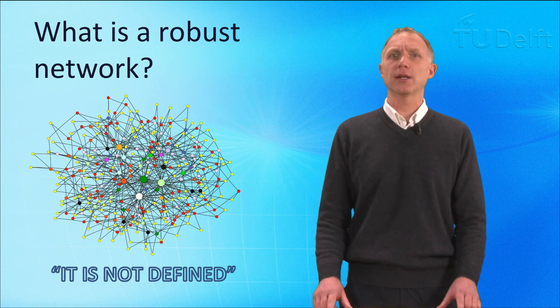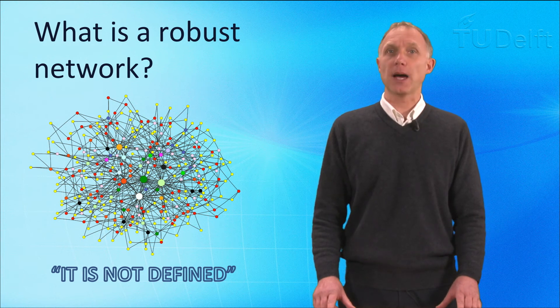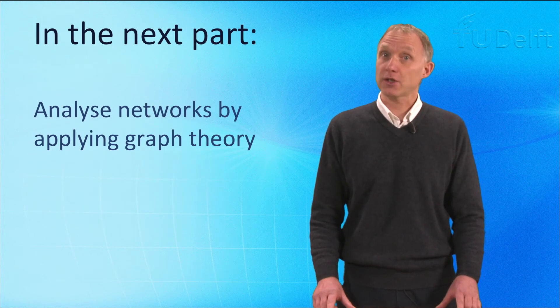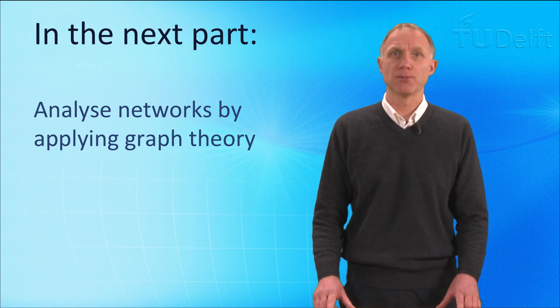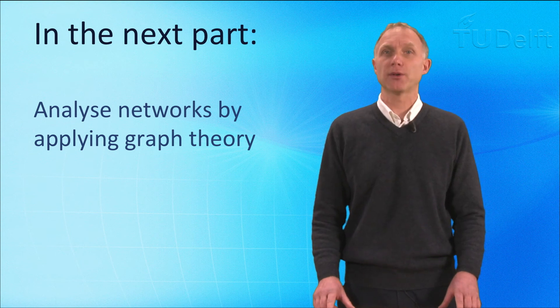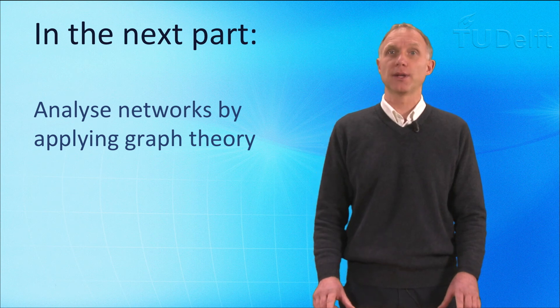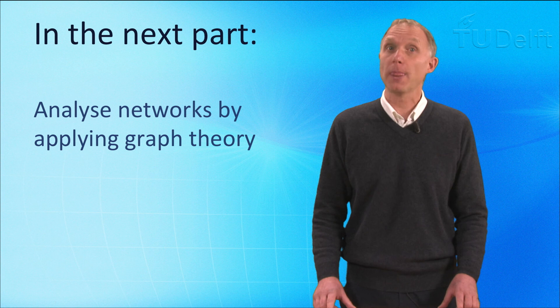In order to define network robustness, we should take a closer look at the network itself and analyze it. In the next part, we will analyze the network by applying graph theory. As we will see, graph theory allows us to define properties of a network that can be computed. Graph theory is a scientific discipline that allows us to quantify network robustness. Ultimately, we like to express the robustness of networks by one number.